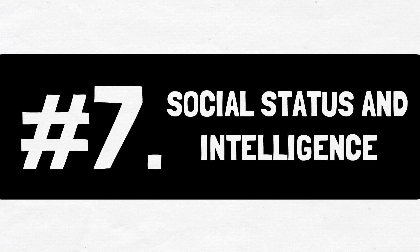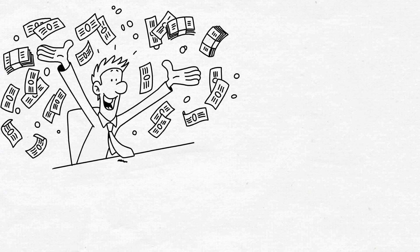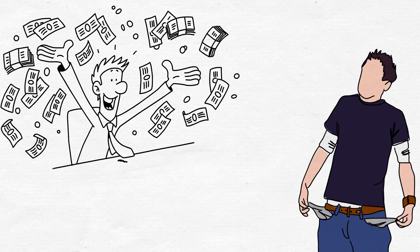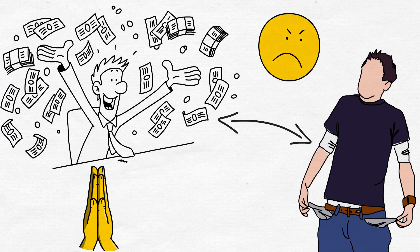7. Social status and intelligence. It is a common practice to believe that successful and wealthy people are wise and intelligent. On the other hand, those with less fortune are sometimes considered foolish and ignorant. Therefore, people have different reactions to individuals with different social statuses. While the first kind is revered and sometimes feared, the latter is belittled. Such cognitive bias is known as the halo effect.